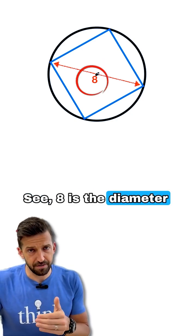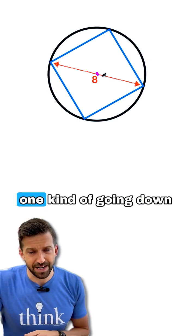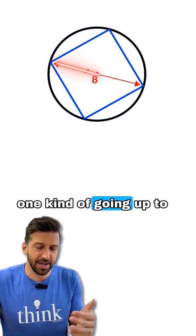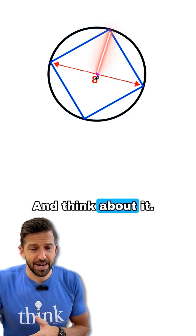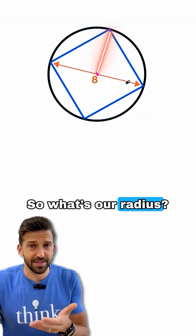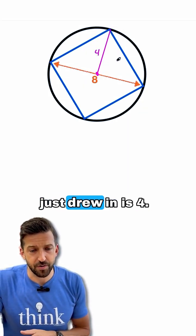See, 8 is the diameter of this circle, and I could think about that as being two radii, one going down to the right, one going up to the left. But if I wanted to, I could draw the radius in here. And think about it, 8 is the diameter, so what's our radius? That's 4. So this length that I just drew in is 4.